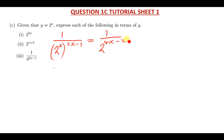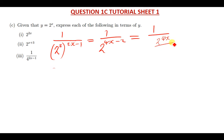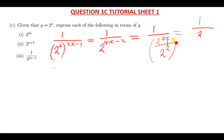So this simplifies further. We have 2 to the power 4x divided by 2 to the power 2. This can also be written as 2 to the power x to the power 4, all divided by 2 to the power 2, which is 4.